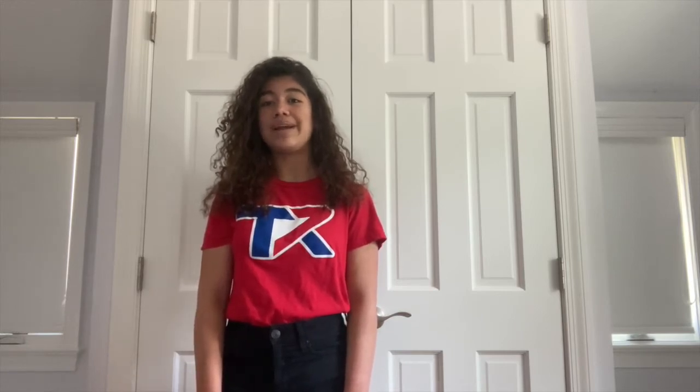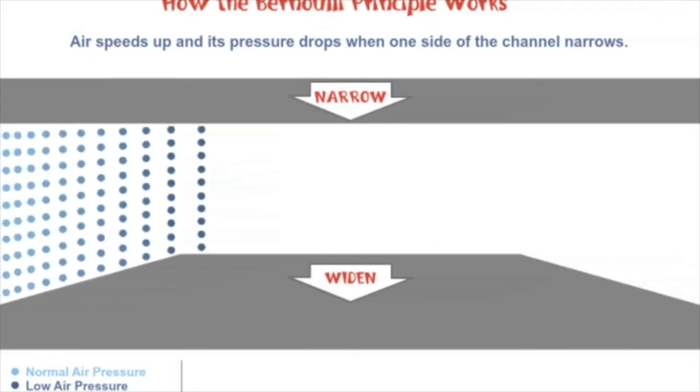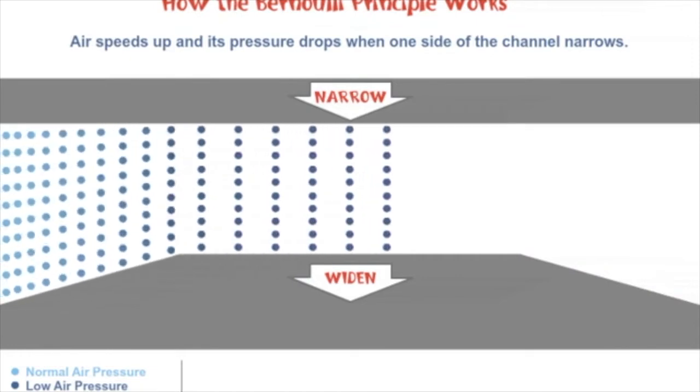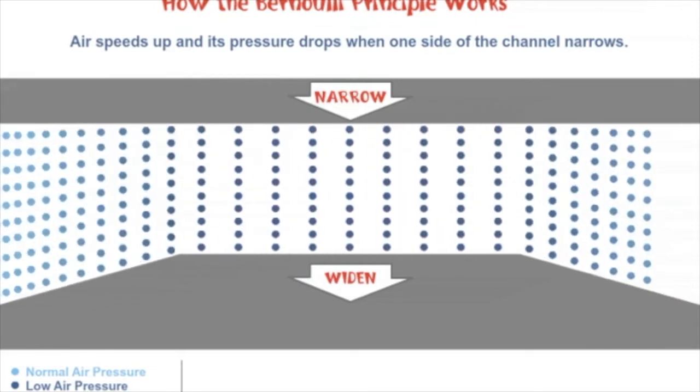Lift is what makes paper airplanes, or planes in general, fly. Lift is caused by a pressure difference on the plane's wing. When air travels over a wing, air on the top moves faster because its path has been narrowed, resulting in less pressure.